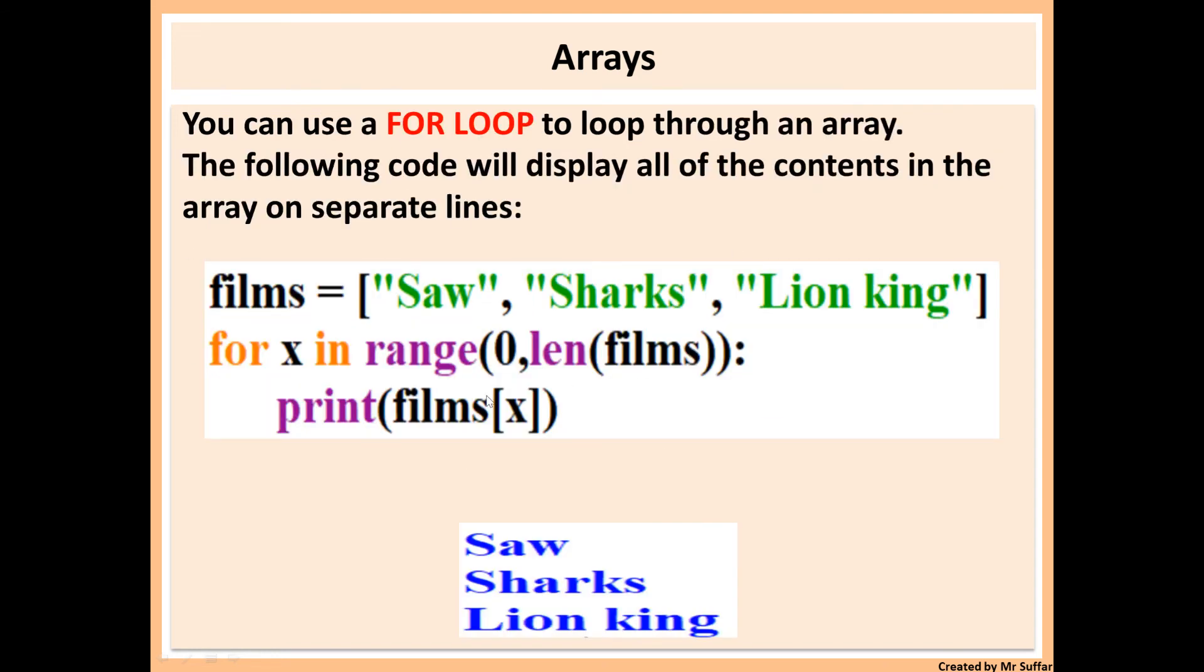You can also use a for loop to display all of the items in the array on multiple lines. This will loop through the array. Normally you would use for x in range or for i in range, and you start from 0 because that's where the array starts with, and then to the length of films or the length of the array. In this case it goes from 0 to 3. Print films[x], x will be 0 at the start, so films[0] is Saw, so we'll display Saw. Then x will increment by one, then it will display films[1] which is Sharks, and so on.